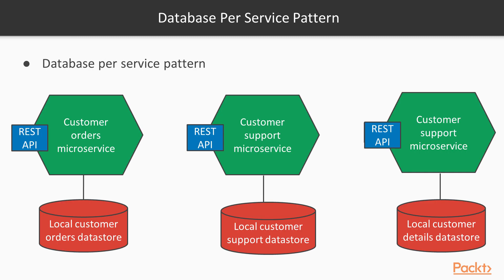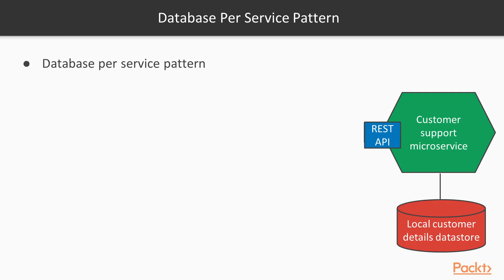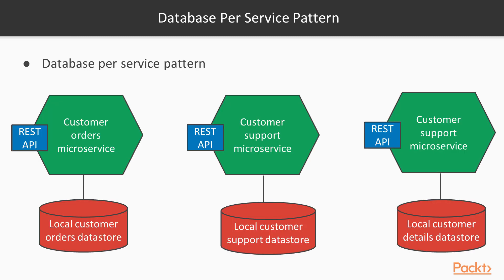In this example you would have to join in memory by calling three APIs — for customer orders, customer support, and customer details — which does work, but imagine having almost 10 different tables to join. This will obviously have an impact on performance and latency compared to database joins, which are highly optimized and purpose-built. I've also seen scenarios where having each team choose the database schema can lead to big inconsistencies in naming conventions and inefficiencies in data storage, impacting scalability and comprehension for anybody reading those tables outside the team.